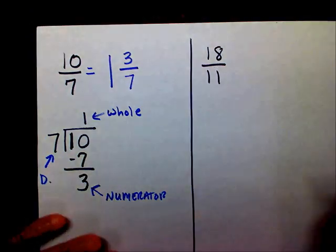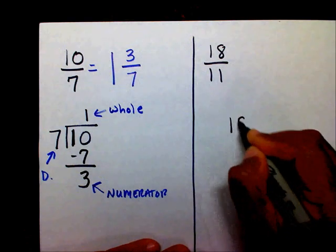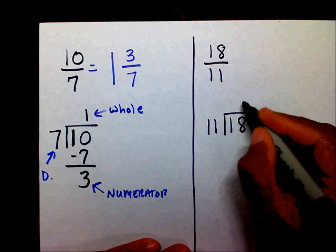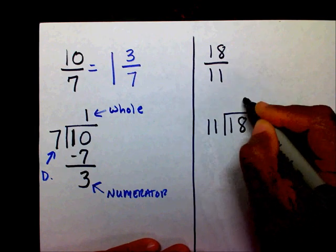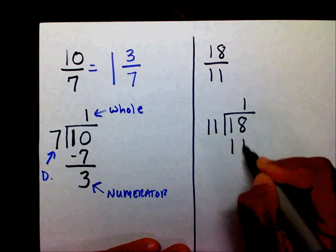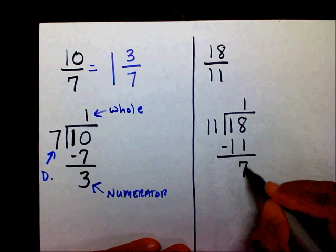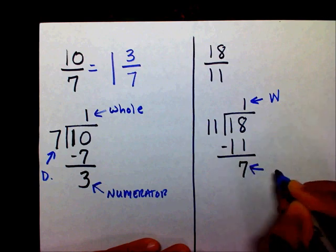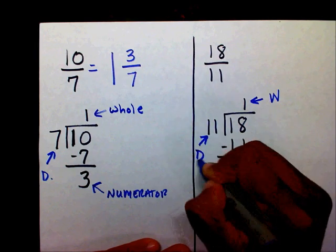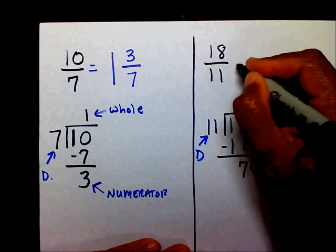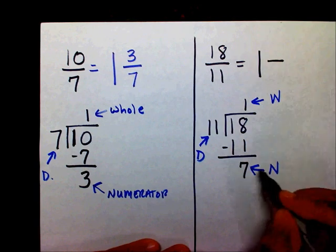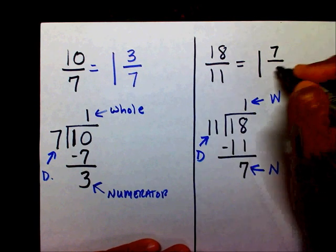Let's try another one — eighteen-elevenths. I'm going to say eighteen divided by eleven. Eleven goes into eighteen one time. One times eleven is eleven. I'm going to subtract, leaving me with a remainder of seven. This is my whole number, this is my numerator, and that's my denominator. So it's going to be one, draw my fraction bar, seven goes in the top, eleven goes in the bottom.